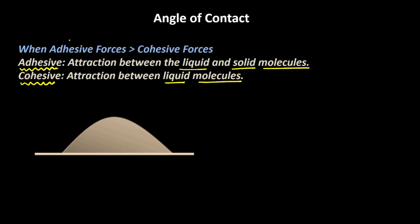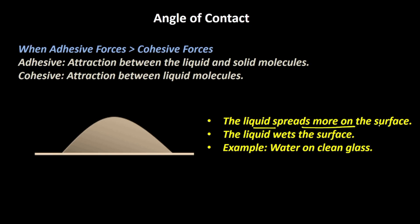Imagine a situation where the adhesive forces are stronger than the cohesive forces. In this situation, the liquid will form a curvature like this on the solid — the liquid spreads out more on the surface. The liquid wets the surface, and the example would be water on a clean glass. The attraction between the liquid and solid molecules is much stronger than the attraction between the liquid and liquid molecules.